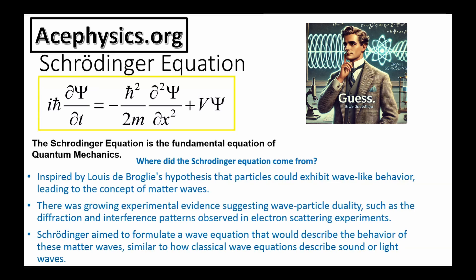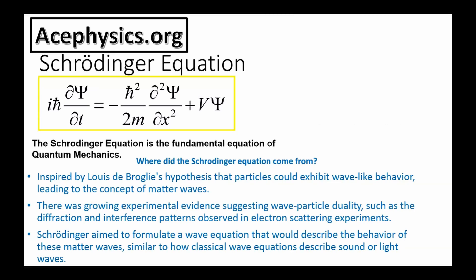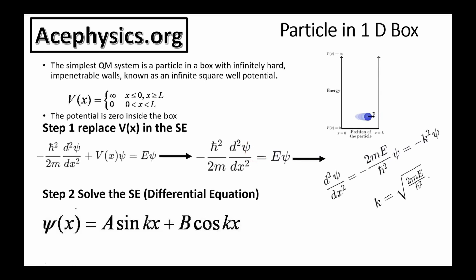much like Newton's laws of motion. It describes how the quantum state of a system changes over time, revealing the wave-like nature of particles and the probabilistic nature of quantum mechanics. Now let's look at an example to explain each one of the terms in the Schrödinger equation, as well as how we apply it.